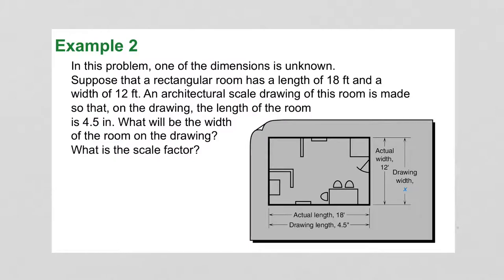Example 2. In this problem, one of the dimensions is unknown. Suppose that a rectangular room has a length of 18 feet and a width of 12 feet. An architectural scale drawing of this room is made so that on the drawing, the length of the room is 4 and 1 half inches. What would the width be?